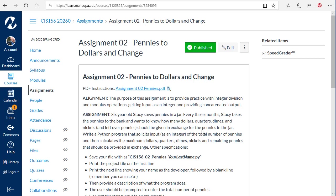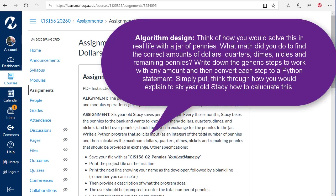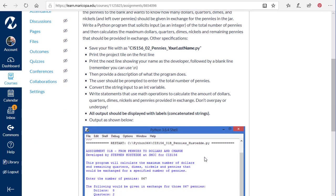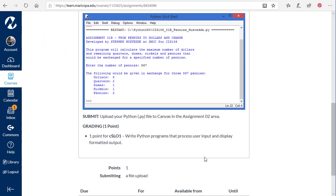So if we have 562 pennies, Stacy should get $5. And then on the remaining 62 pennies we get 2 quarters. And on the remaining 12 pennies we get a dime, no nickels, and 2 pennies left over. You should never have more than 3 quarters, never have more than 2 dimes, and never have more than 1 nickel, and never more than 4 pennies.